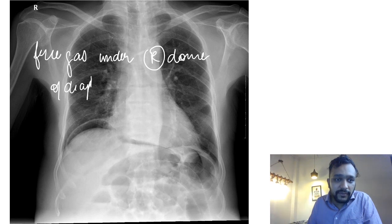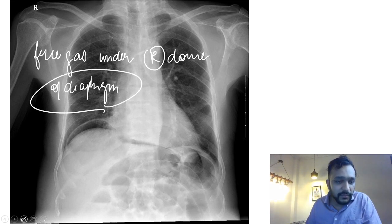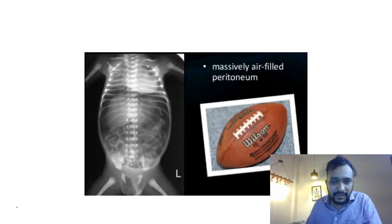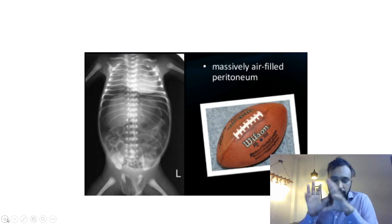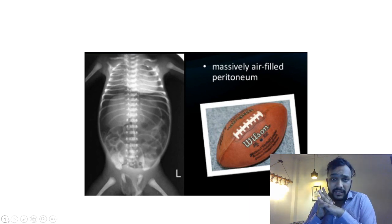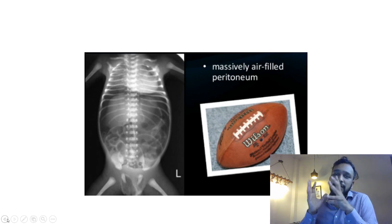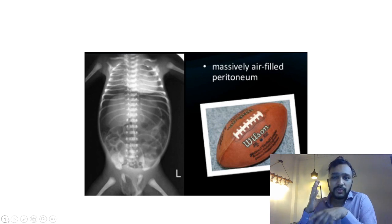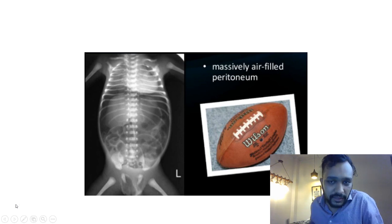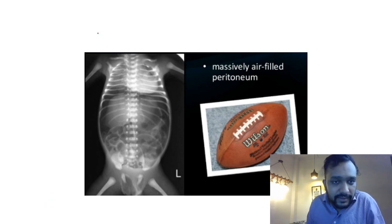This is what you are going to see in a patient with pneumoperitoneum. Normally on an abdominal X-ray you will find a few bowel loops with foci of radiolucency due to the presence of air within the bowel loops, but you will not be able to demarcate any structures. When there is air within the peritoneal cavity, all the structures of the abdomen start to become visible and we can see their borders.